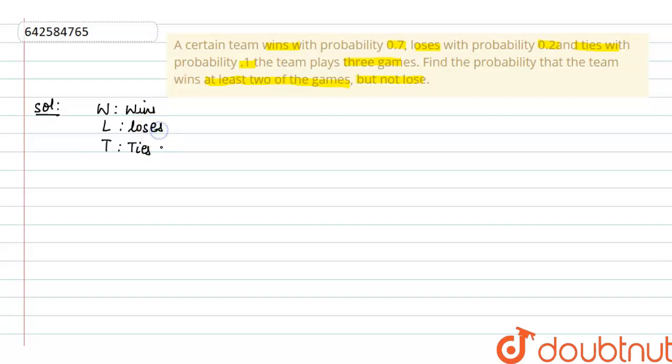Now, according to the question, probability of winning is 0.7. Similarly, probability of losses is 0.2 and probability of tie is 0.1.